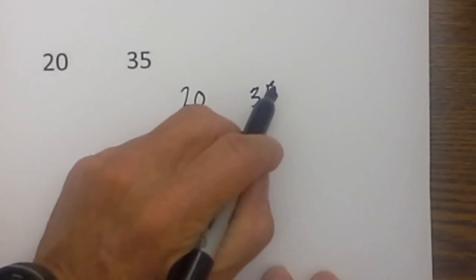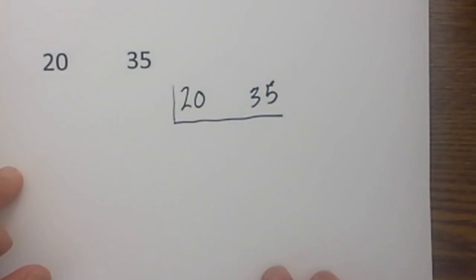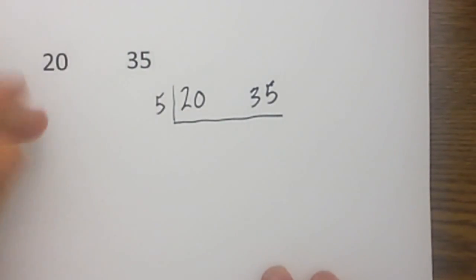The first technique: I just write the two numbers and then draw a bracket underneath and then find the smallest prime number that will divide into both of these evenly. And for 20 and 35 the smallest would be 5.